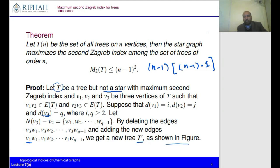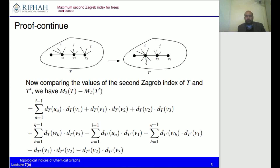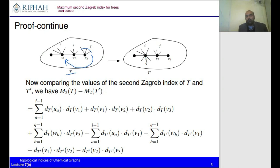This transformation is shown graphically in the figure. In T, the degree of v1 is i, degree of v2 is j, and degree of v3 is q. In T', we remove those vertices from v3 and connect them to v1 as shown. We then apply the definition of the second Zagreb index to both T and T' and compare their values.